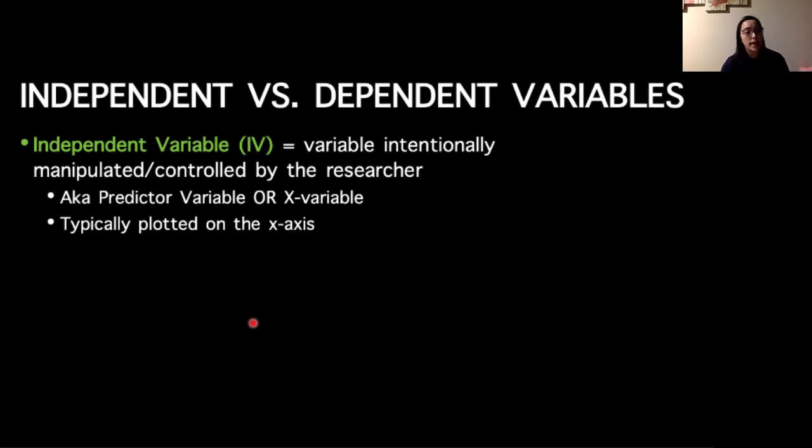The independent variable is the variable that we intentionally manipulate, or it's the variable that is controlled by the researcher. It's also called the predictor variable or the X variable because it's often plotted on the X axis.